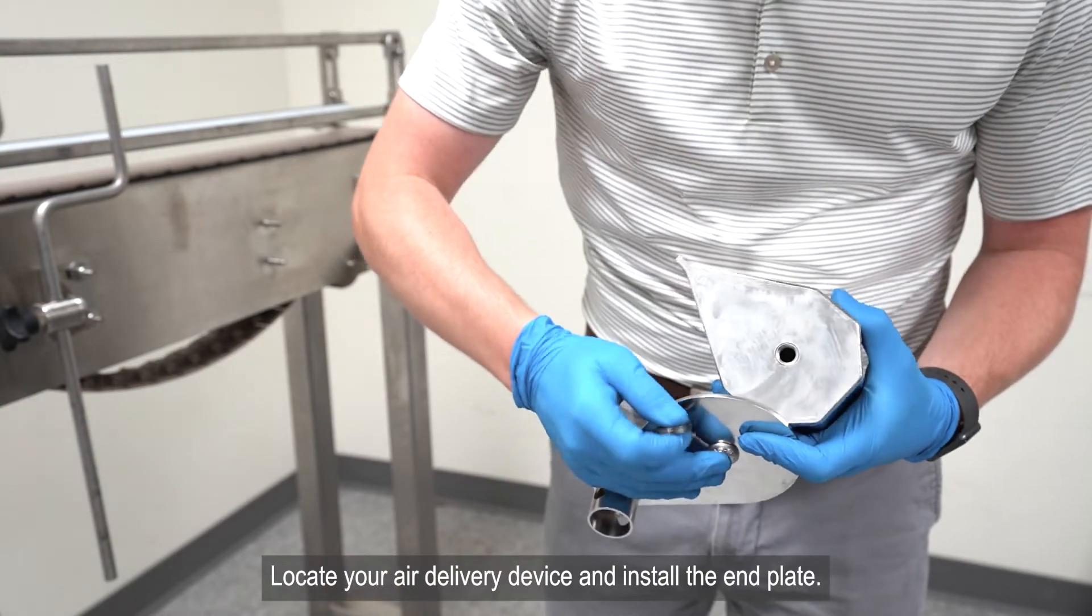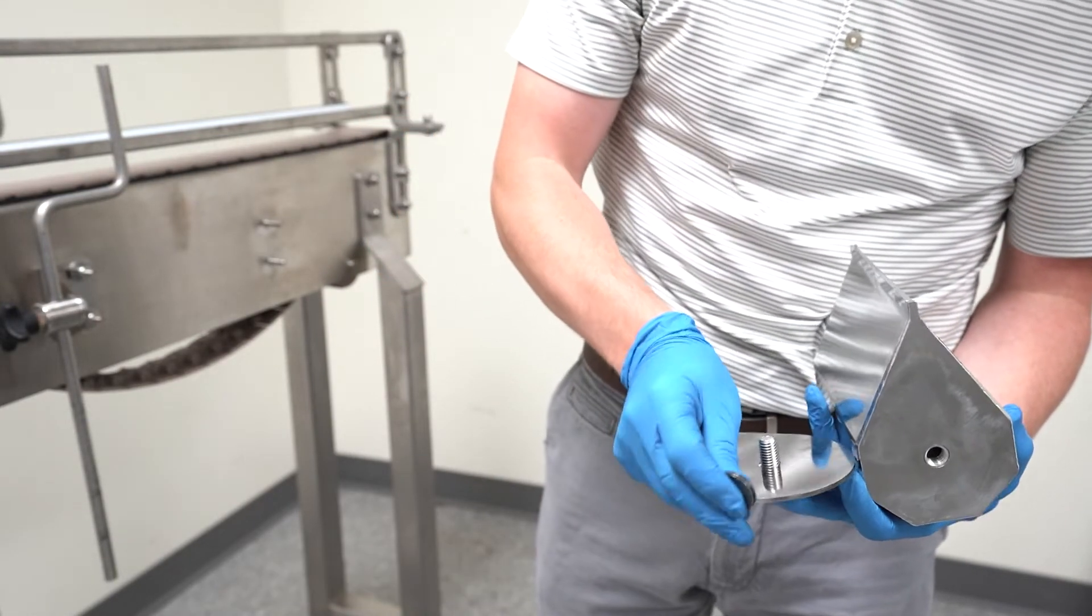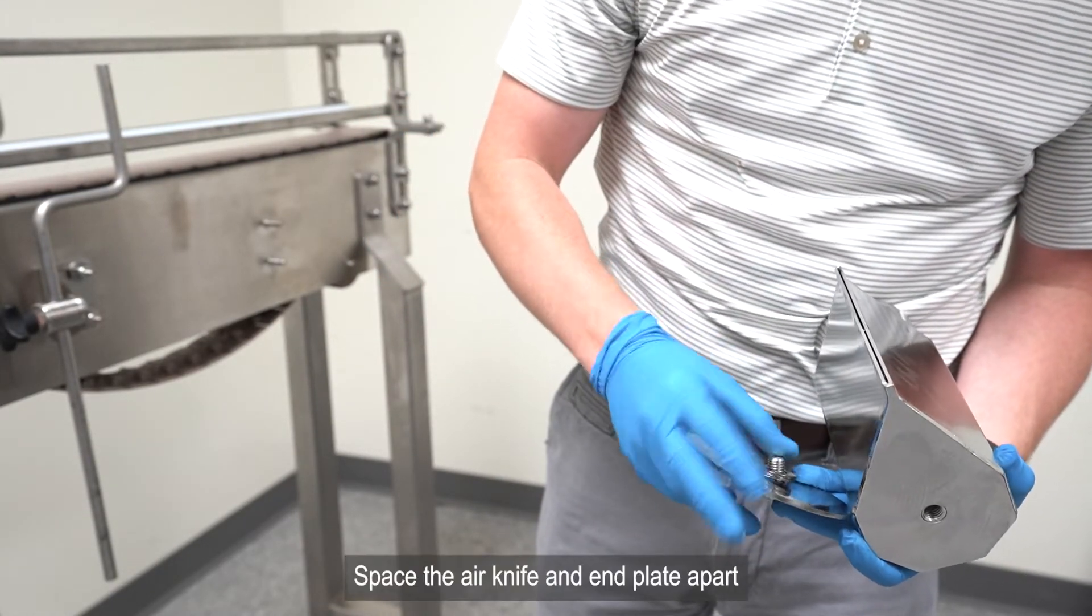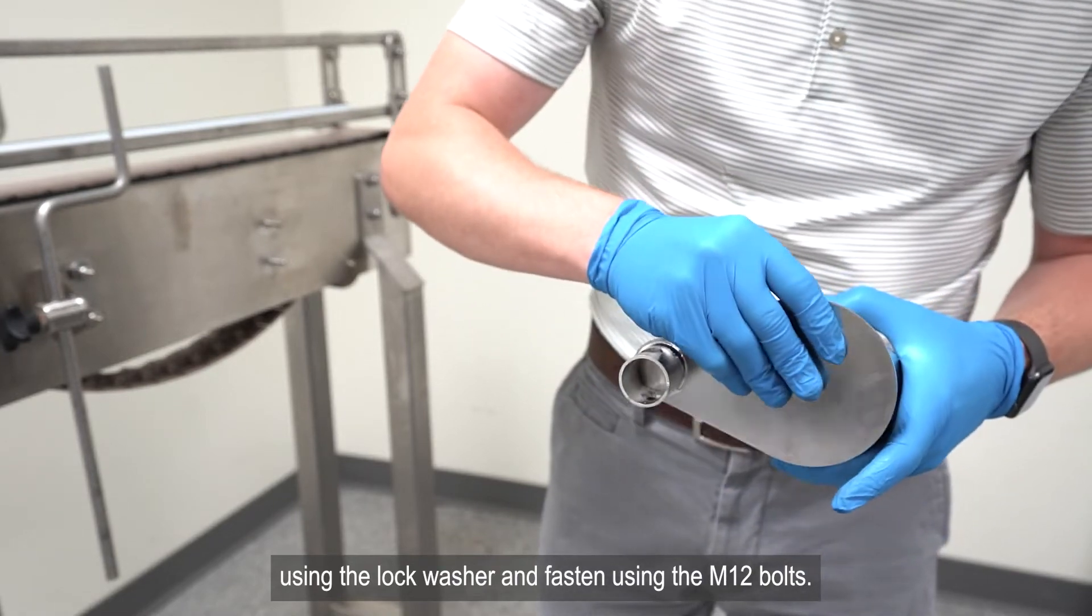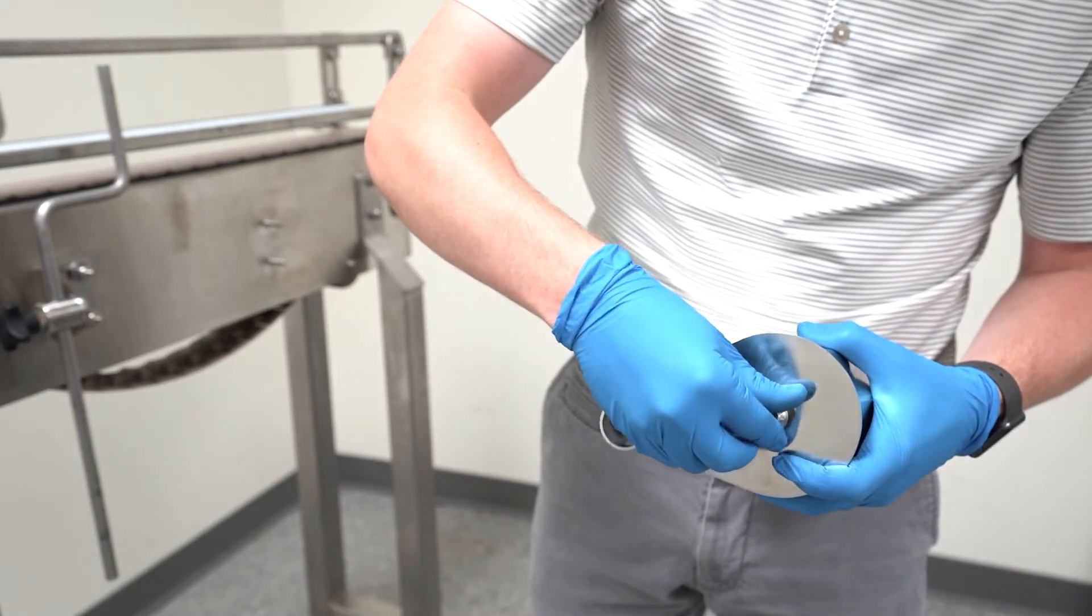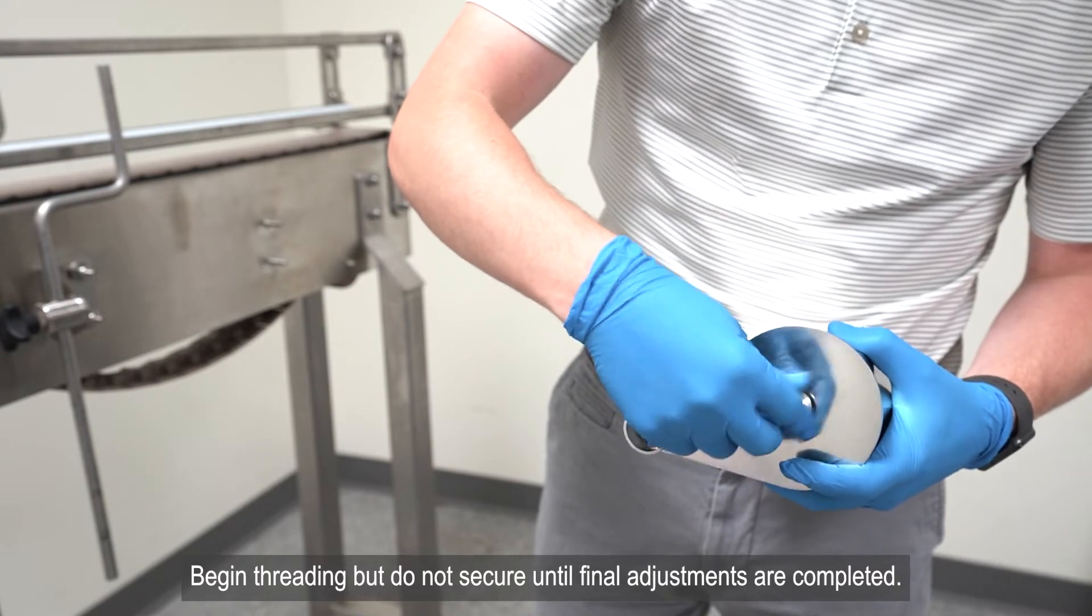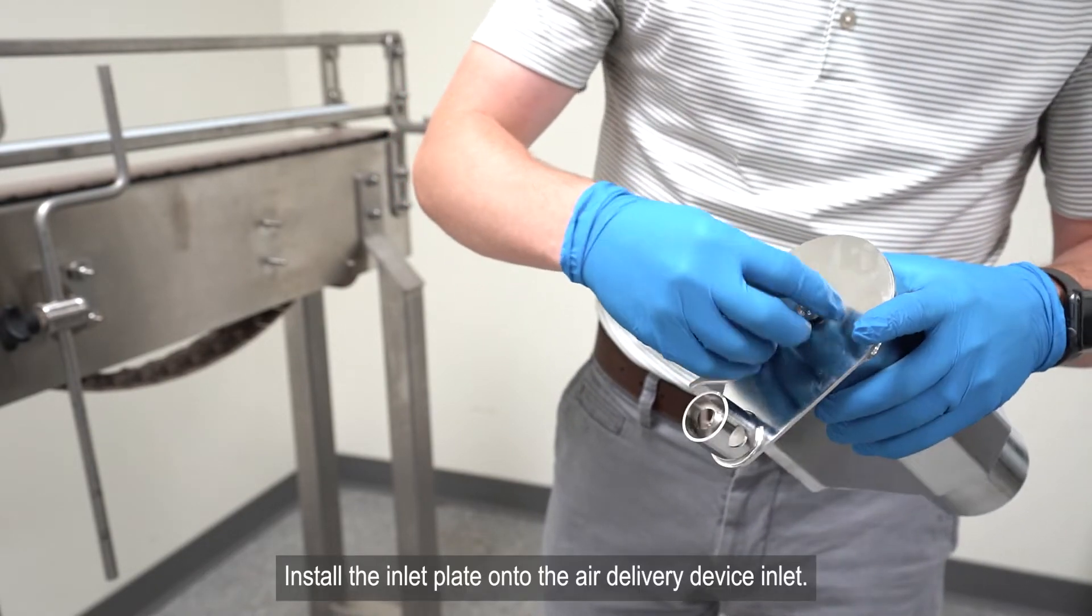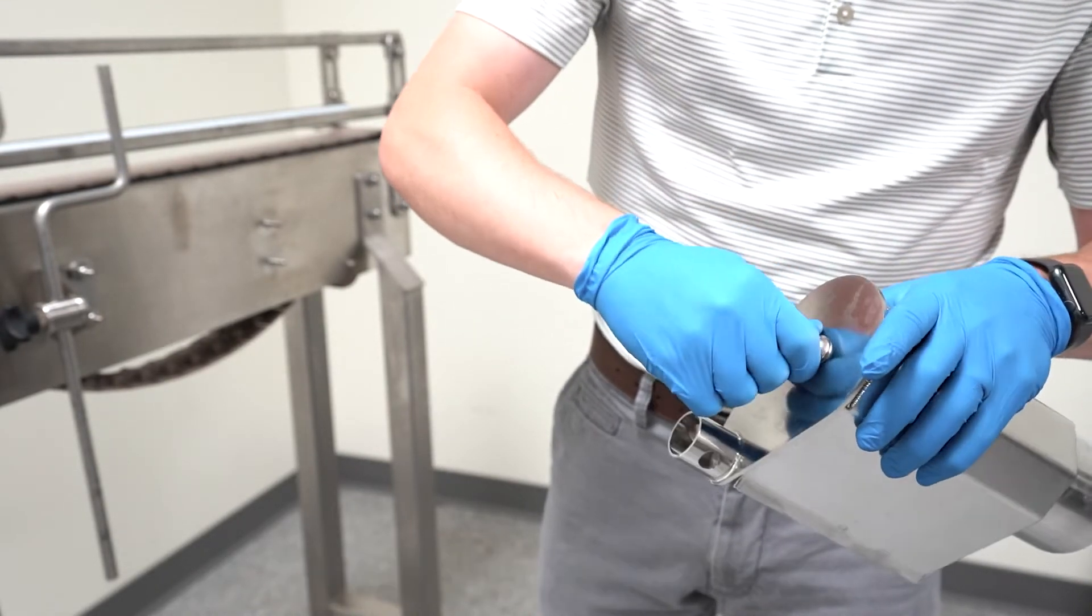Locate your air delivery device and install the end plate. Space the air knife and end plate apart using the lock washer and fasten using the M12 bolts. Begin threading but do not secure until final adjustments are completed. Install the inlet plate onto the air delivery device inlet.